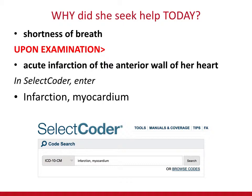Why did she seek help today? What is the doctor focused on today? That was her shortness of breath. But upon examination, they found acute infarction of the anterior wall of her heart. Shortness of breath is what is known as an included sign or symptom, which means it's already known she's going to have shortness of breath because she has the infarction. So that is not coded. What is coded is the confirmed diagnosis: acute infarction of the anterior wall of her heart.